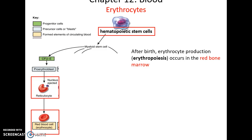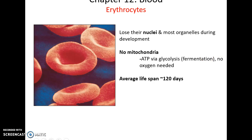Red blood cells are formed via erythropoiesis in the red bone marrow. Hematopoietic stem cells produce all the blood cells, and some will go down the line to become red blood cells. Red blood cells lose their nuclei and many organelles as they develop, which is why they're not considered true cells — they're formed elements. They also lack mitochondria, so any ATP they produce is through glycolysis, a type of fermentation, which is very inefficient but does not need oxygen, so they don't use the oxygen they carry.